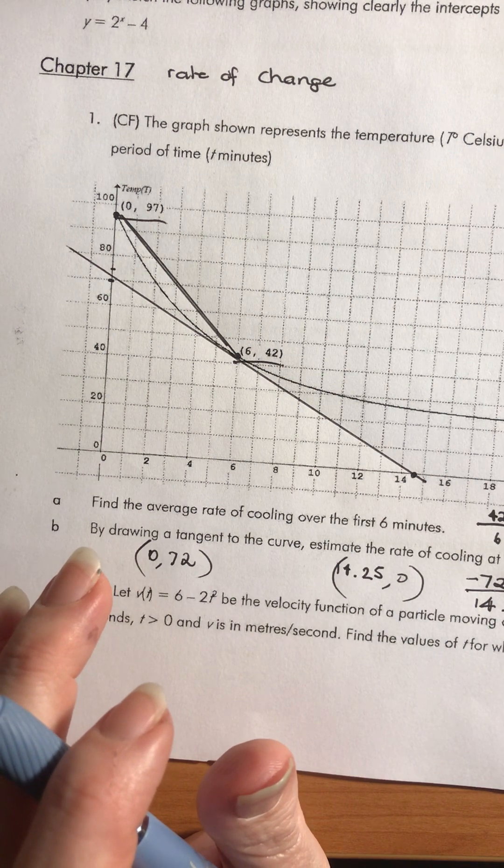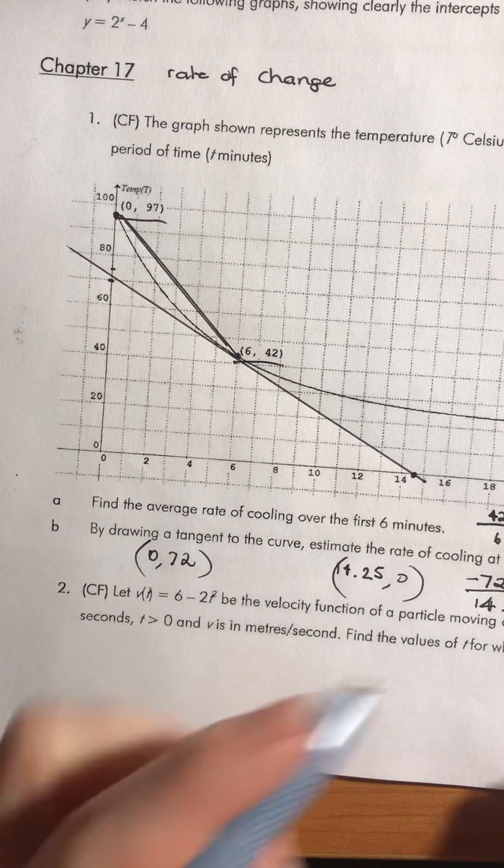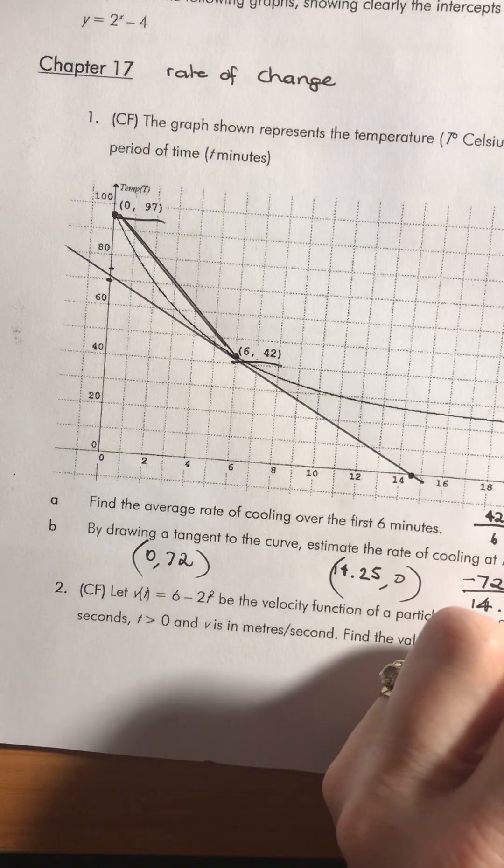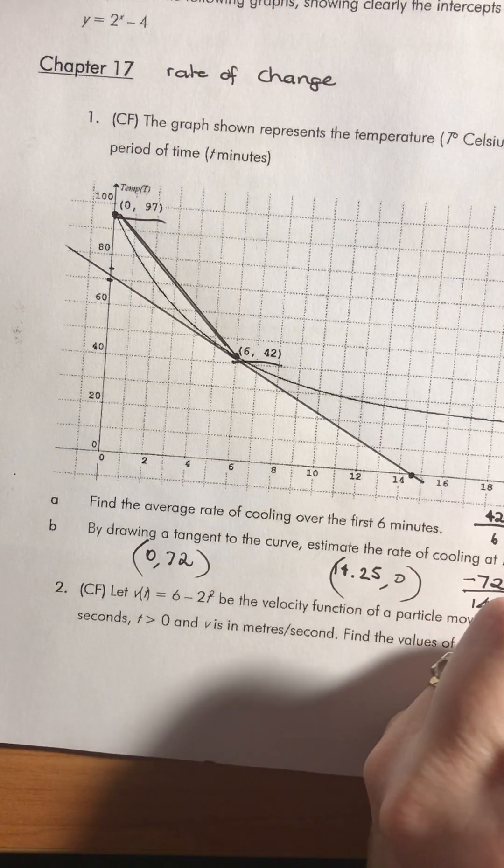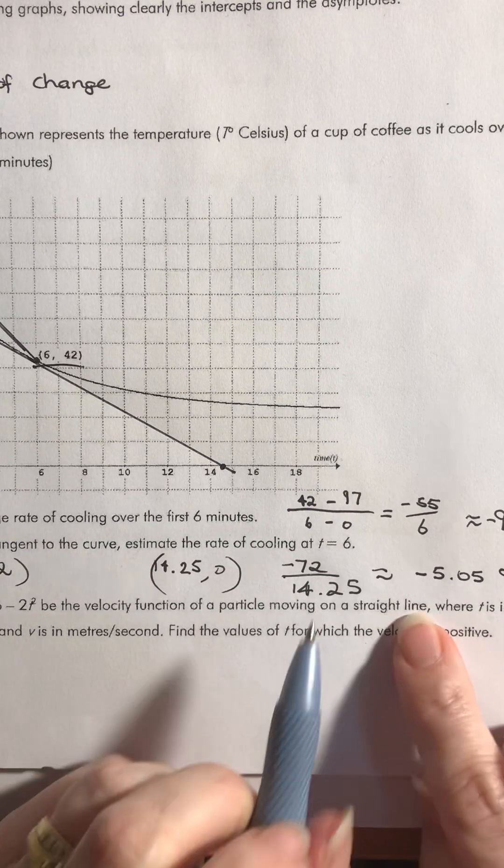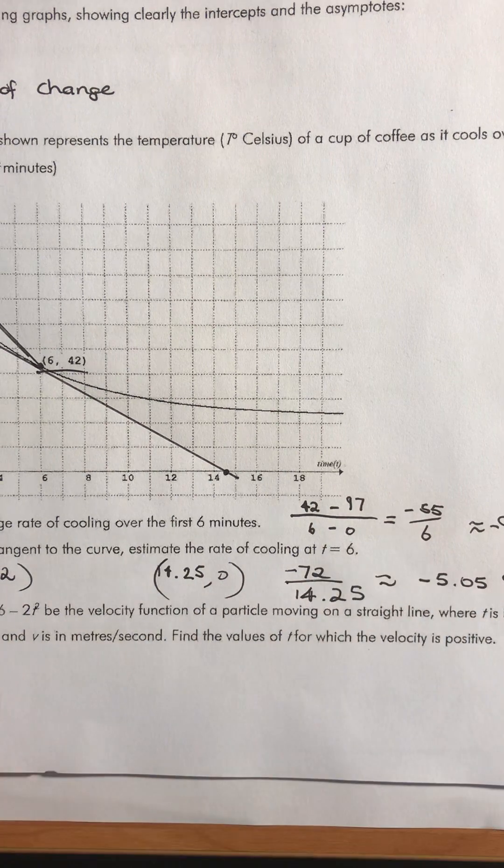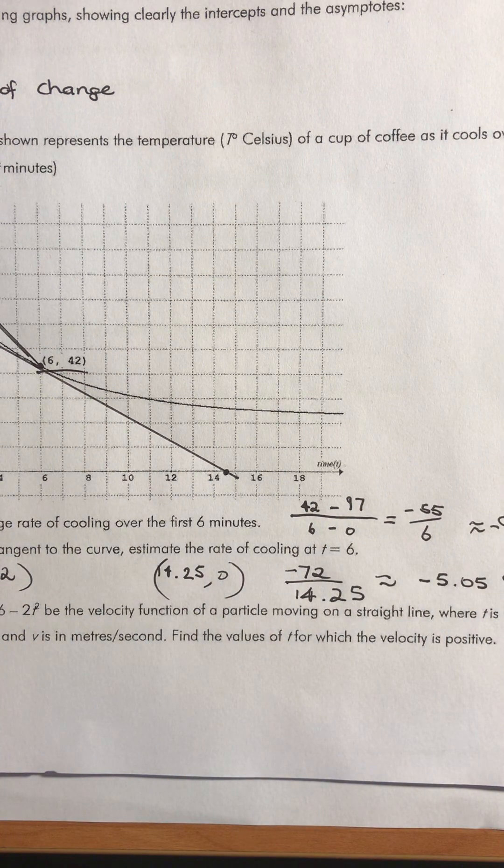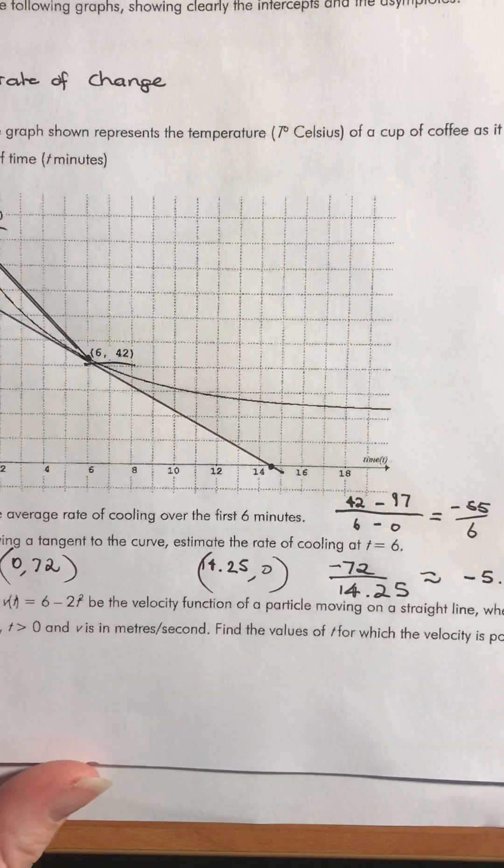And I get about negative 5.05, and that'll be degrees Celsius per minute. So there's my estimate there. Obviously everyone's going to get a different estimate depending where they draw their line in. So I'm going to leave that video there. I'm going to start a new one for the next question.